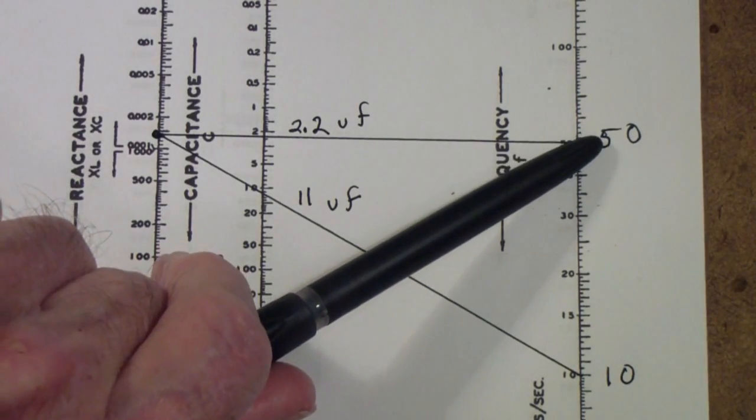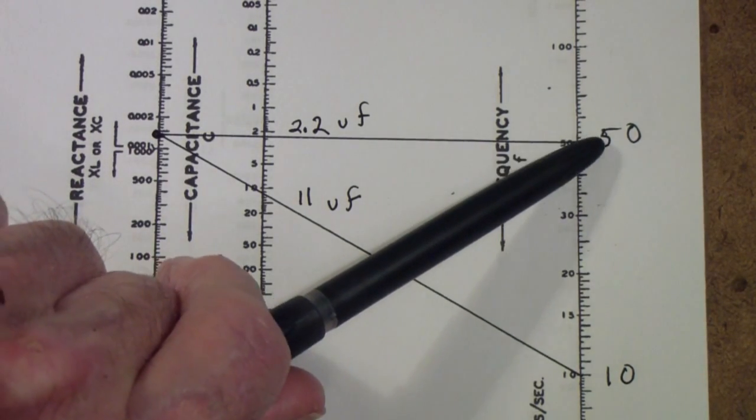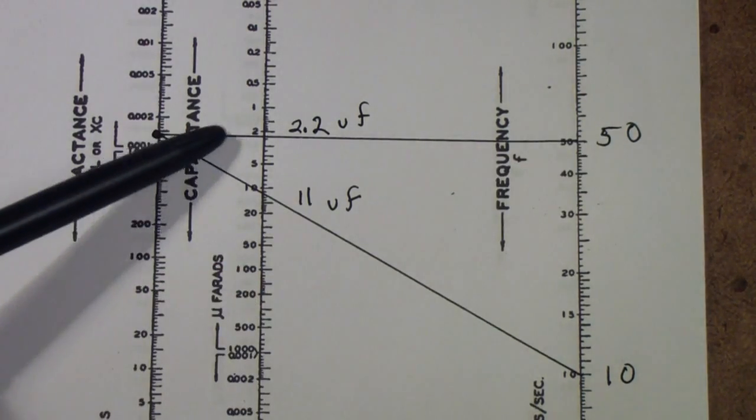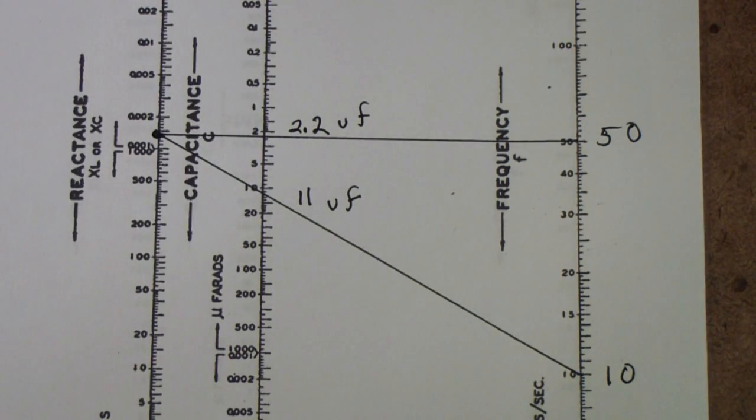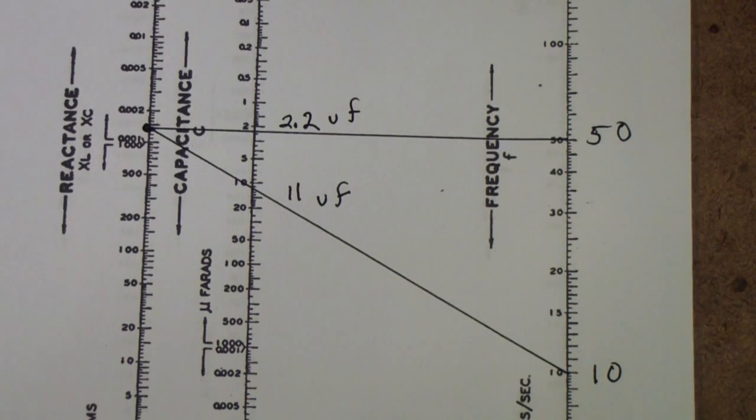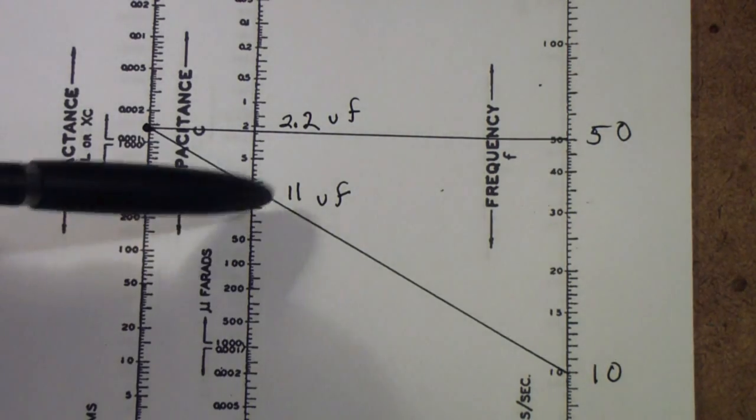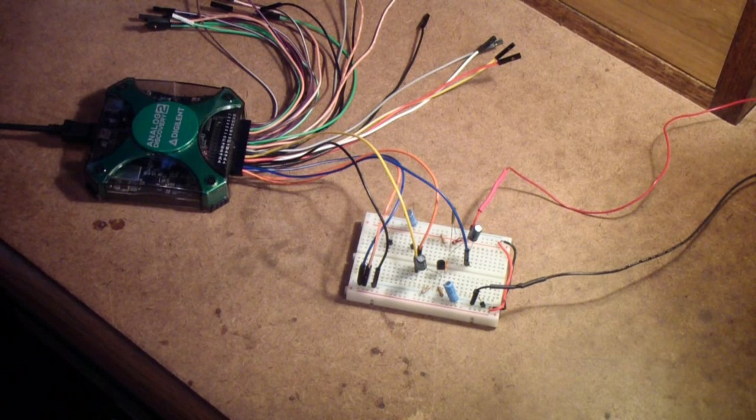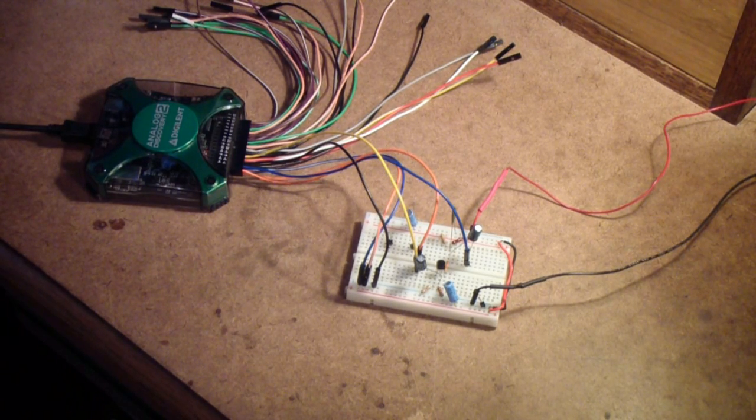For a 50 cycle half power point, or 3dB point, it crosses the axis at about 2.2 microfarads. We now have these two values. 2.2 microfarads and 11 microfarads. And for our purposes we're just going to call that 10. So I've inserted two 10 microfarad capacitors in the circuit. One at the input, one at the output.